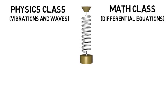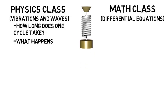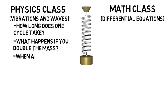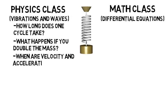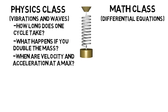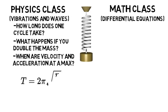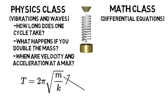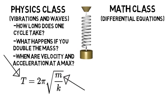But let's see the differences. In the physics class, you'd be asked things like, how long does one cycle take, what happens if you double the mass, when are velocity and acceleration at a maximum, and so on. You'd be given equations, maybe for the time of one cycle, and have to realize if I doubled the mass, the period increases by a factor of the square root of 2. You get equations, but have to understand the physics of what is going on.